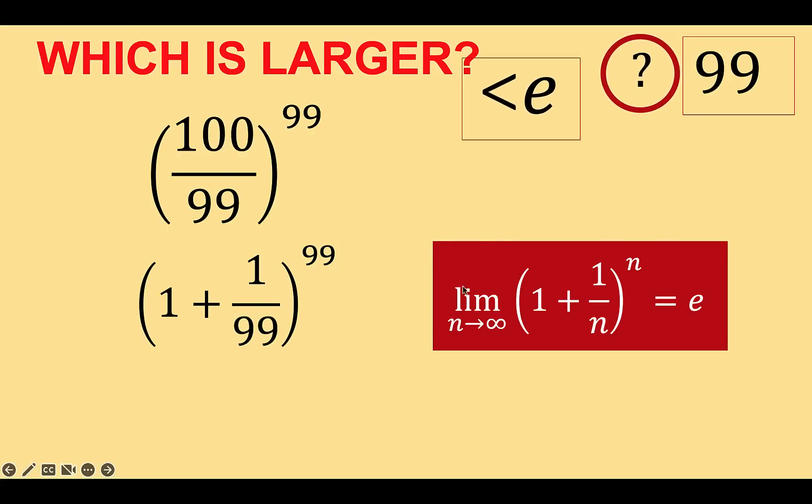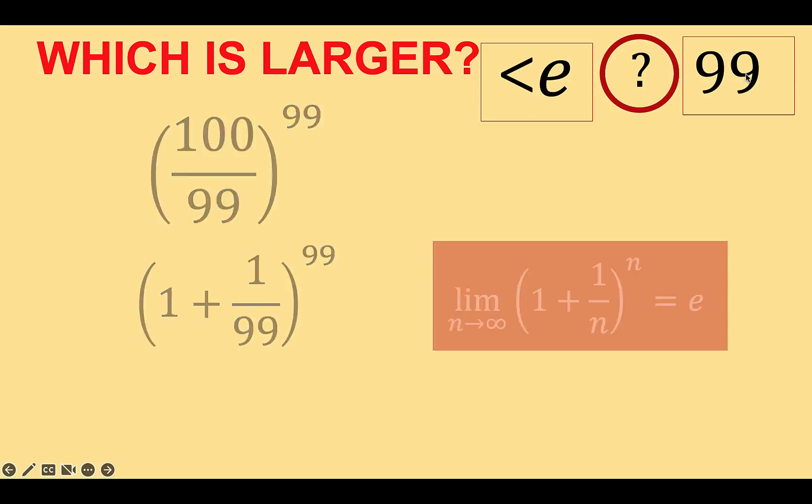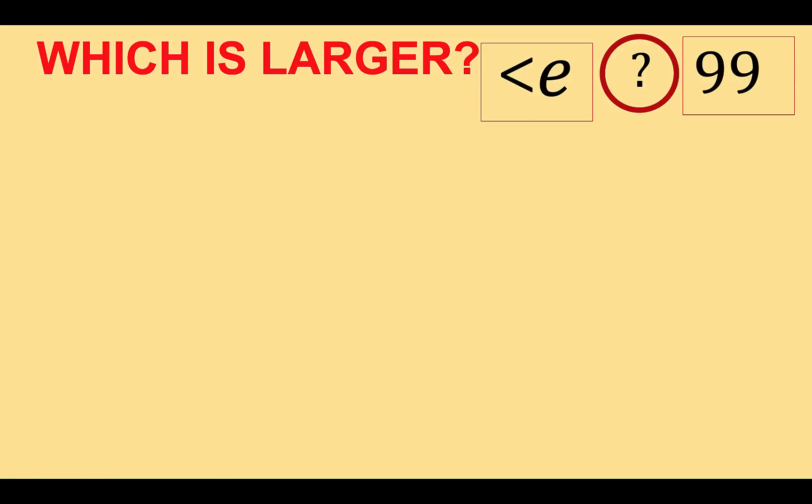So what we are now comparing is a number that's less than 2.71 and 99. So obviously, we know that 99 is the greater number. And therefore, going back now to the original question,